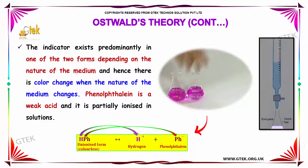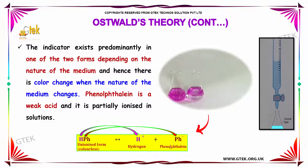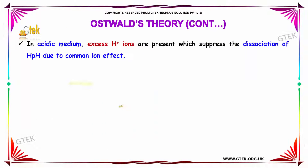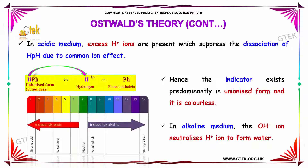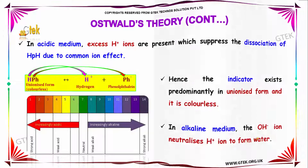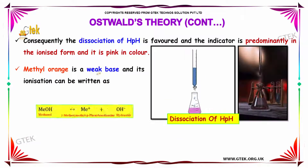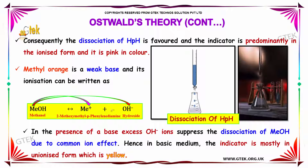Phenolphthalein is a weak acid and it is partially ionized in solution: HPH (unionized form) gives H⁺ and Ph⁻. In acidic medium, the excess H⁺ ions suppress the dissociation of HPH due to the common ion effect. Hence, the indicator exists predominantly in the unionized form and it is colorless. In alkaline medium, the OH⁻ ions neutralize H⁺ ions to form water. Consequently, the dissociation of HPH is favored and the indicator is predominantly in the ionized form and it is pink in color.